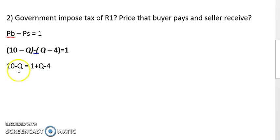If we take the Q to the other side and take the 1 and the 4 to the other side, it's 10 minus 1 plus 4 equals 2Q. That's 13 equals 2Q, which means Q is equal to 6.5, so 6.5 units will be sold within the market.